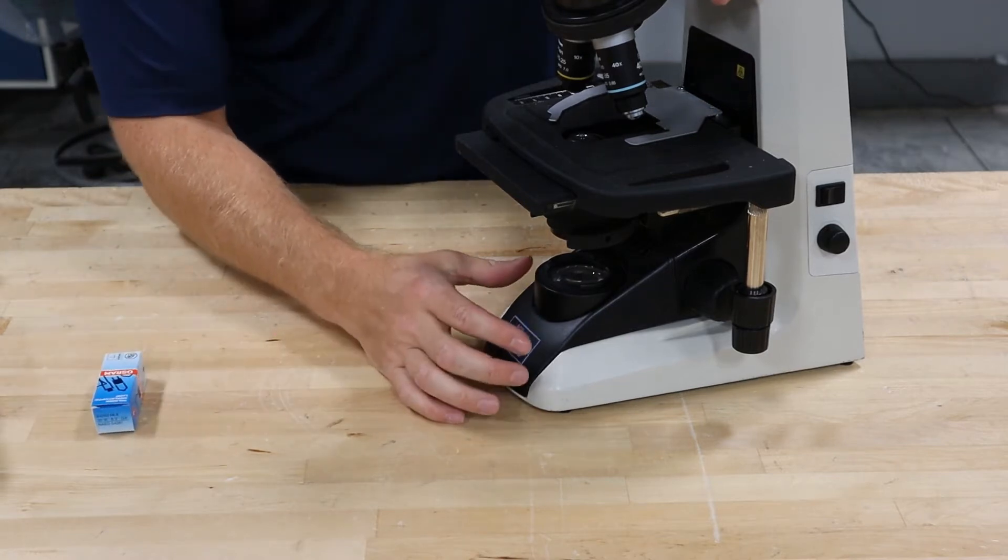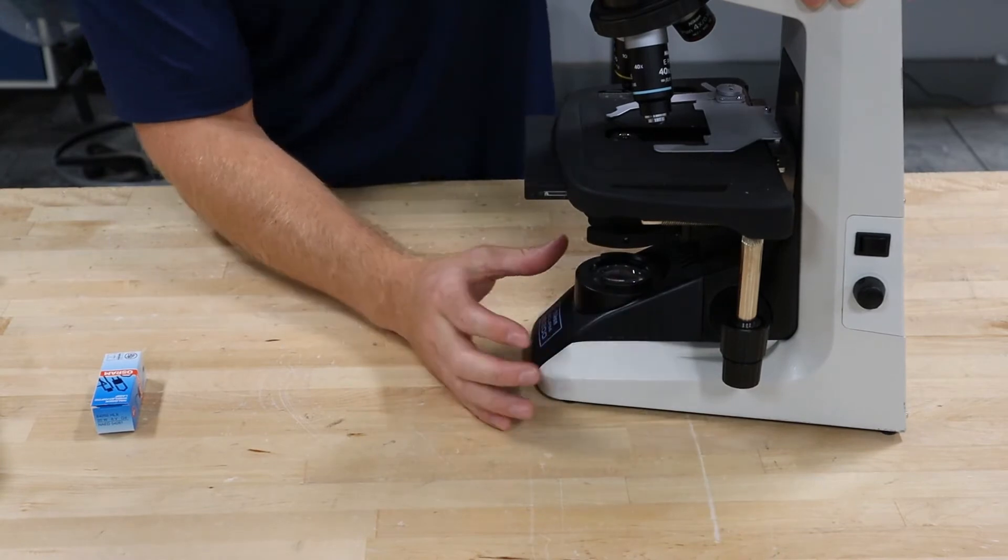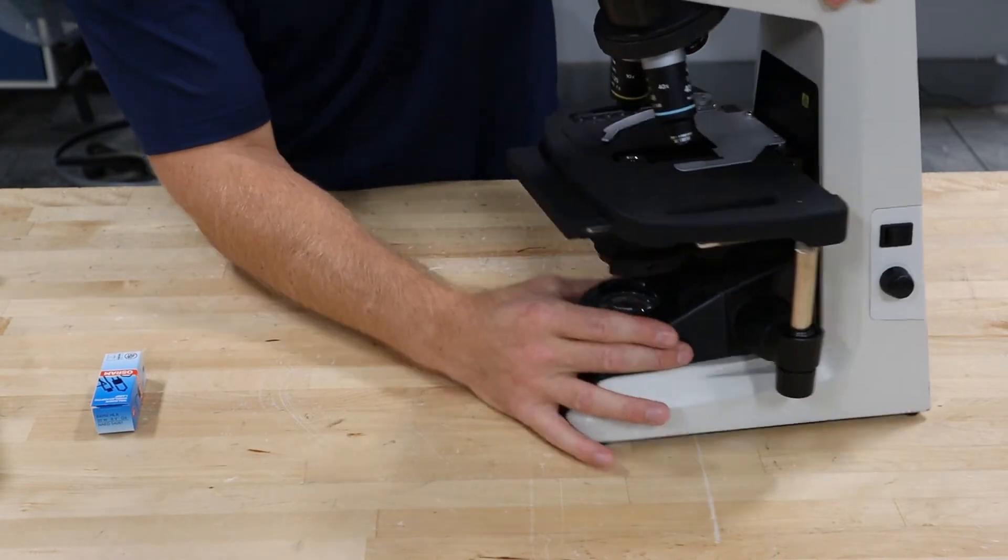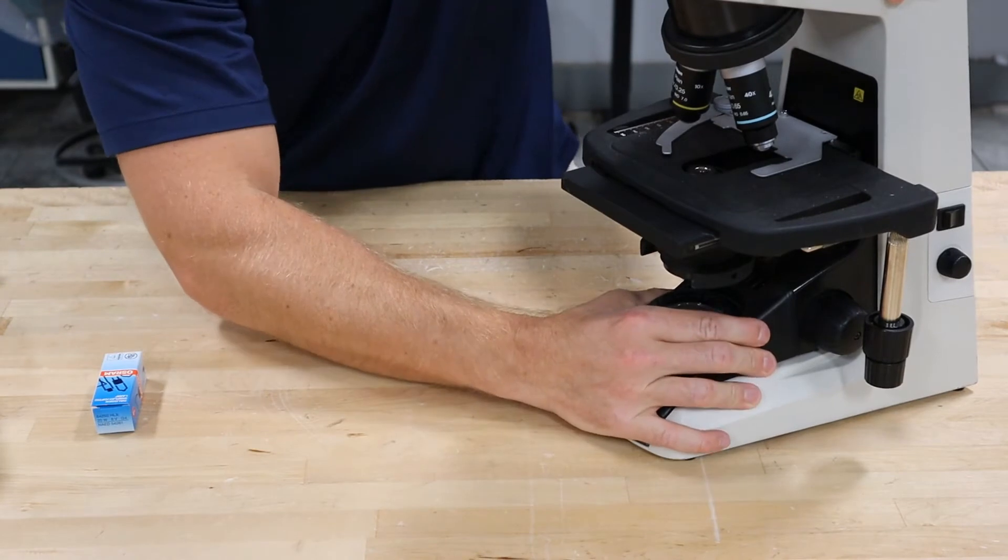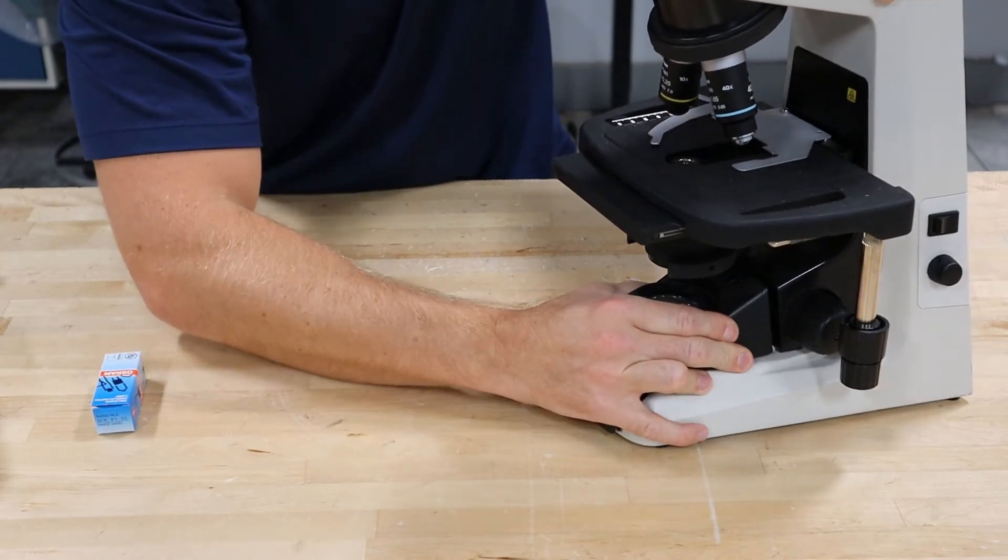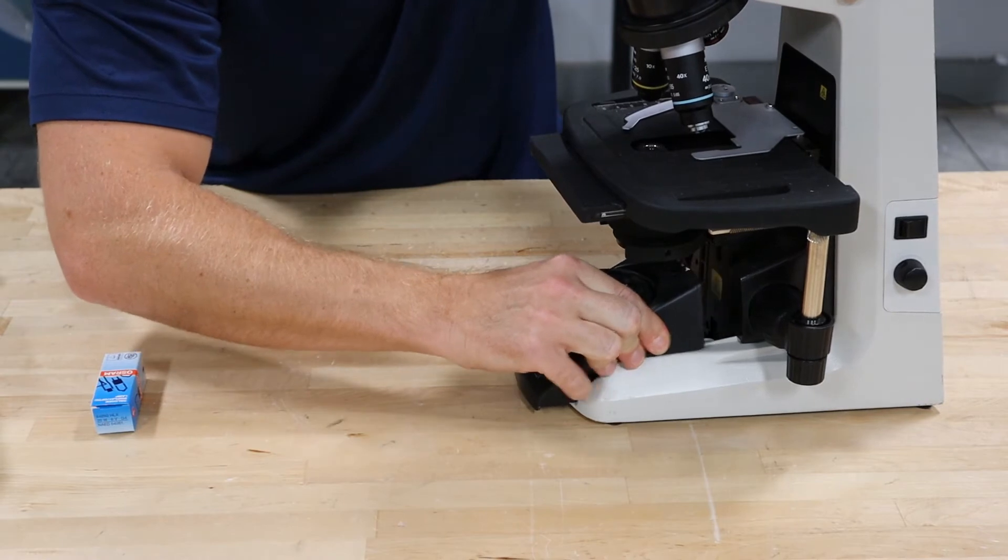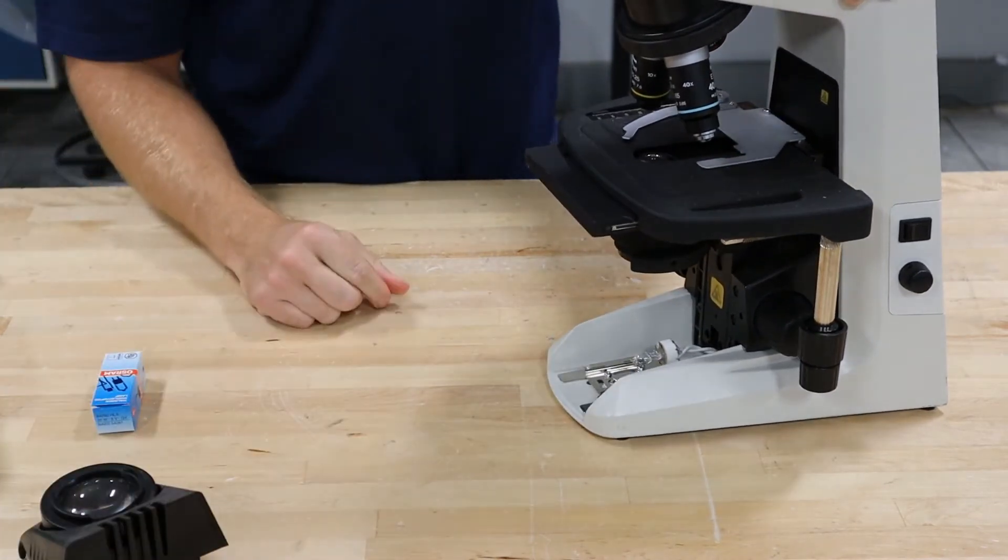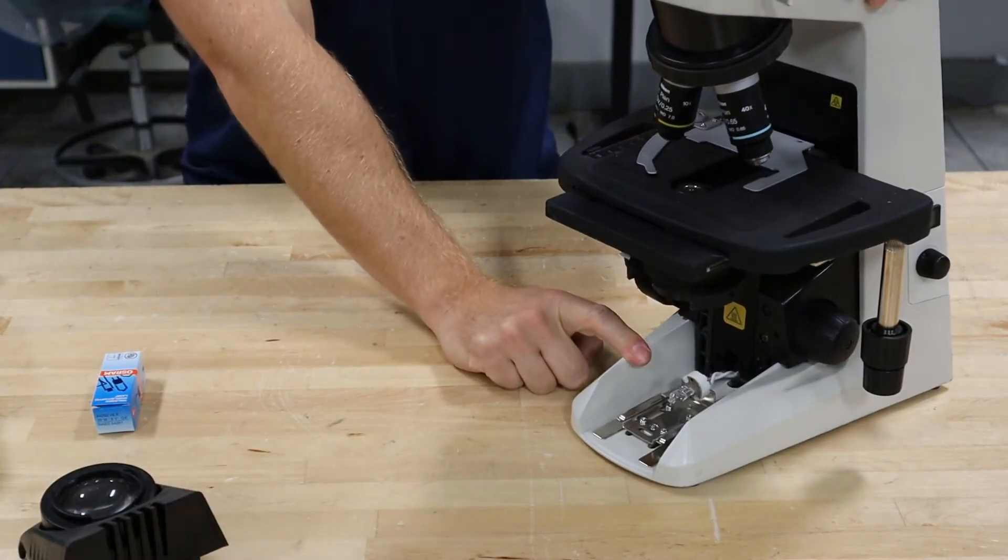Okay, we're going to take this microscope here. There's some finger grooves here on the right and left side. You're going to grab those and then squeeze it and then kind of work it out. There you have access to the bulb and the socket.